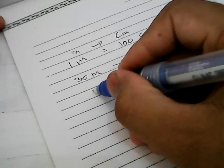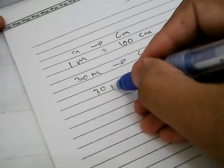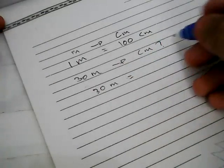Let's go ahead and solve this problem. We need to write this 30 meters and give it an equal sign.